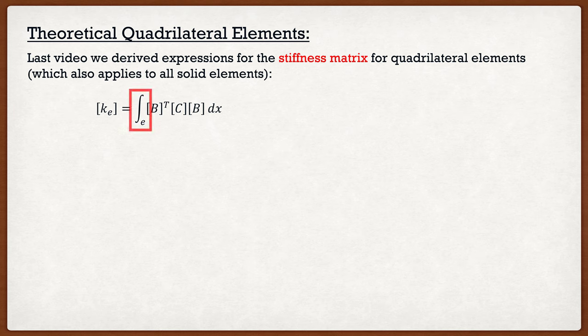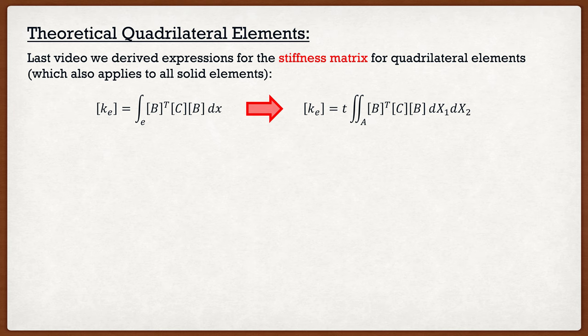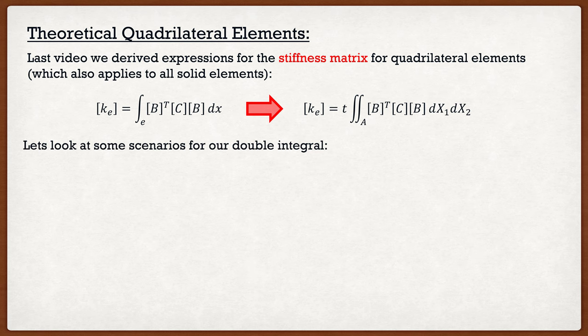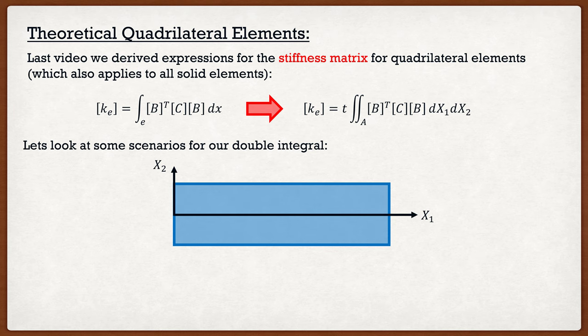This integration over the element is the problem we are going to address with isoparametric quadrilateral elements. In the last lecture we noted that for a 2D case, thickness into the page is usually constant, so we define it as t and the integral becomes t multiplied by a double integral — essentially the area of our element. For a nice square element going from 0 to 1 in the x1 and x2 directions, the integration bounds are simply 0 to 1 and 0 to 1.